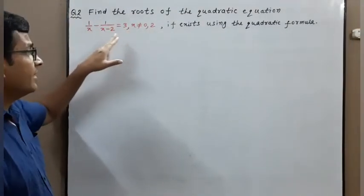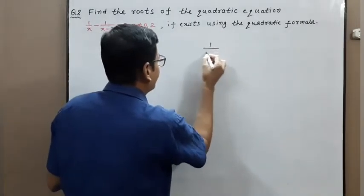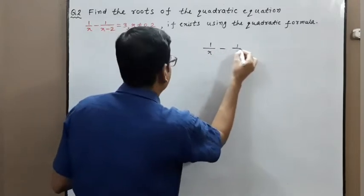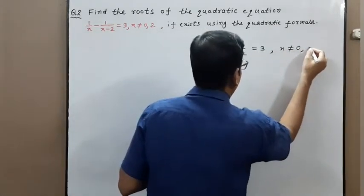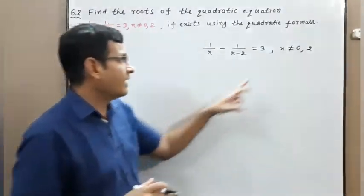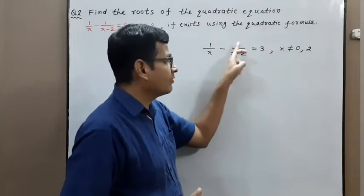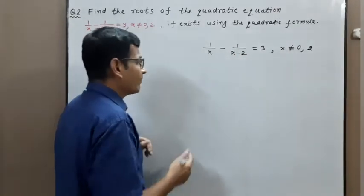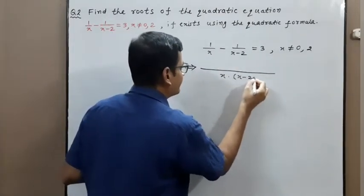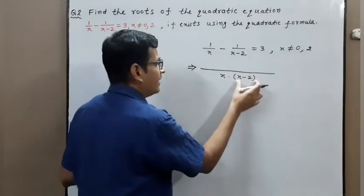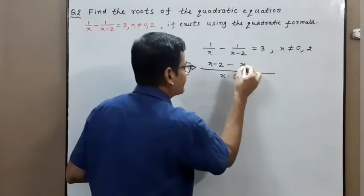Next problem: find the roots of the quadratic equation 1 upon x minus 1 upon x minus 2 equal to 3, using the quadratic formula. First convert it to standard form ax squared plus bx plus c equal to 0. Note that x not equal to 0 and x not equal to 2, since we cannot divide any number by 0. The LCM of x and x minus 2 is the product x times x minus 2. Dividing LCM by x gives x minus 2, and dividing LCM by x minus 2 gives x.